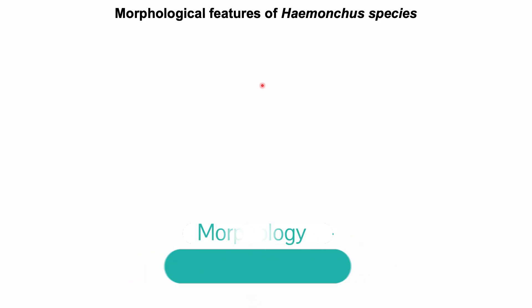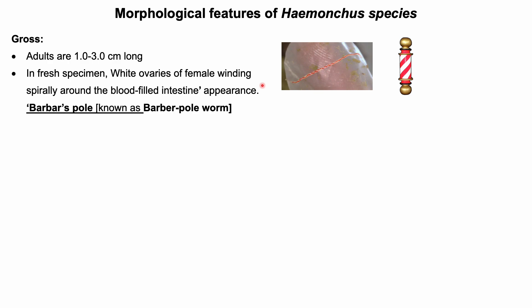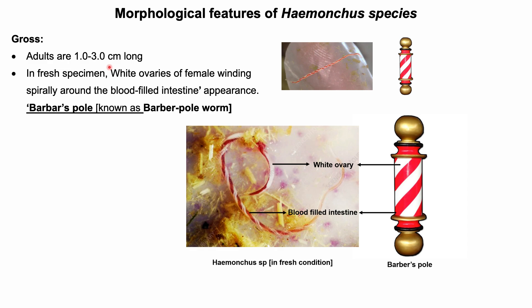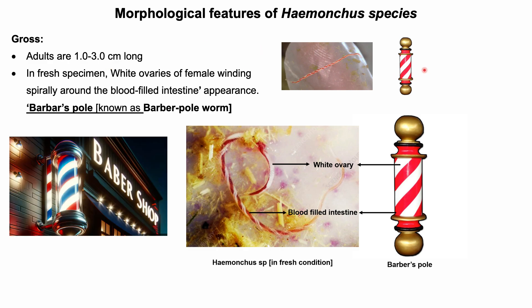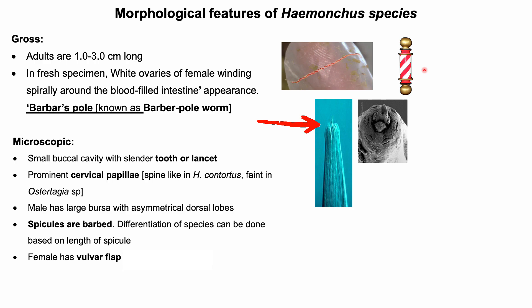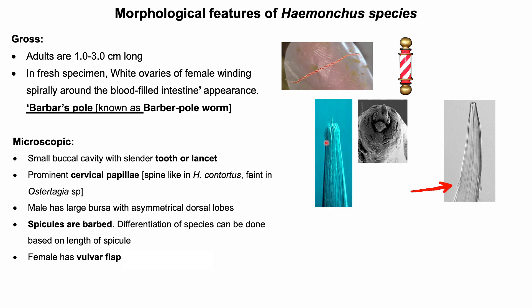Morphological features of Hemonchus species. Grossly, the parasite is one to three centimeters long. In fresh specimens, the white ovaries of the female spirally coil or twist around the blood-filled intestine, giving it similarity to the barber pole. Microscopic features include a rudimentary buccal capsule with a tiny tooth or lancet visible only under the electron microscope. This lancet is used for puncturing blood vessels of the host and is found in adults as well as larval stage L5. The presence of cervical papillae also helps in identification.